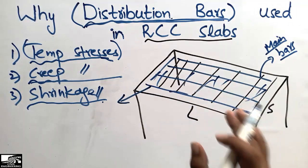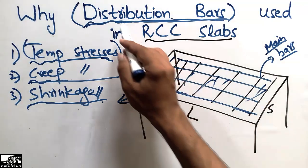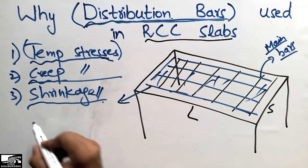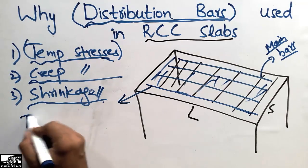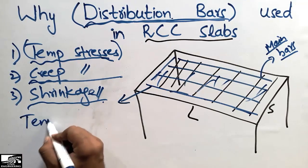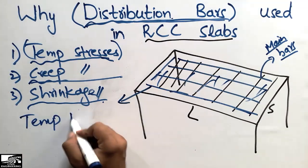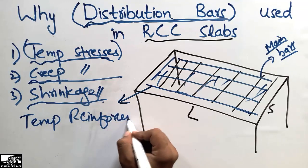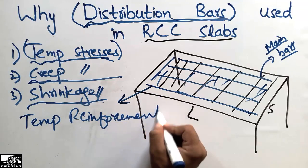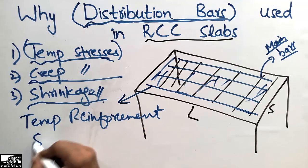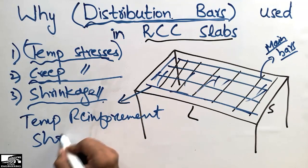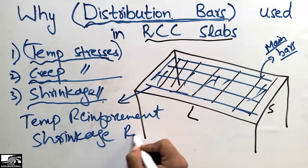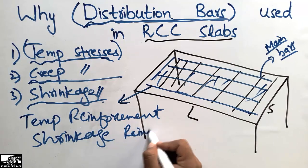So this was the main reason why we provide distribution bars. Distribution bars are also called temperature reinforcement and shrinkage reinforcement, and they must be provided in the slab.